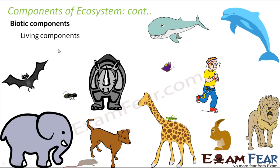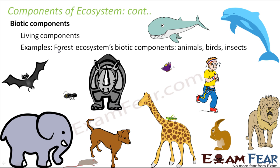These biotic components are further classified based upon their food habit and behavior, which we will look at a little later. For example, if we take the forest ecosystem, the biotic components are the living organisms you see inside a forest — several animals, birds, and insects — they all form the biotic component of the forest ecosystem.